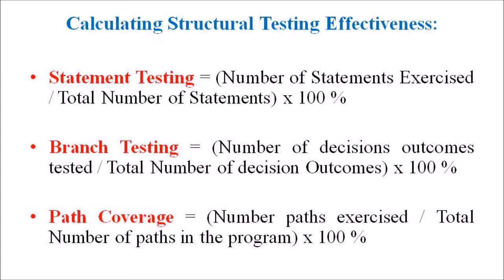For calculating structural testing effectiveness, the equations used are: first, Statement Coverage (%) = (Number of statements executed / Total number of statements) × 100%. Second, Branch Coverage (%) = (Number of decision outcomes tested / Total number of decision outcomes) × 100%.